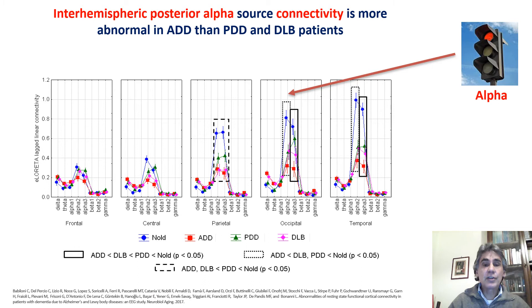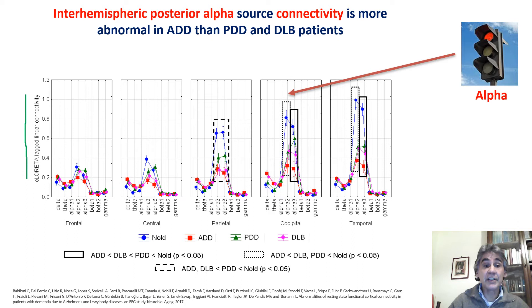We then reanalyzed data to investigate the cortical source connectivity in the resting state, eyes closed condition. In the inter-hemispheric source connectivity analysis, frontal region means left frontal against right frontal, and the same applies for central, parietal, and so on — representing the connectivity between homologous regions of the two hemispheres. The diagram shows the magnitude of cortical source connectivity on the vertical axis, with frequency bands from delta to gamma.